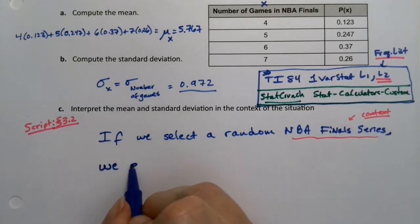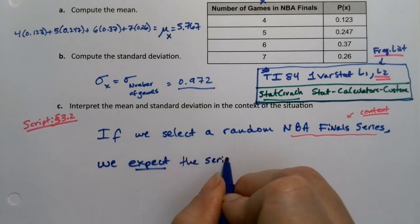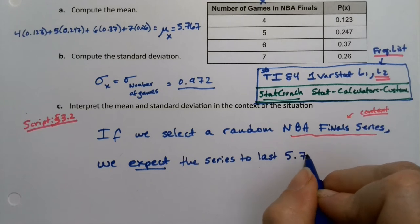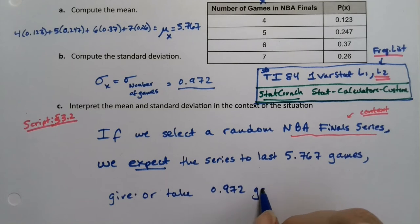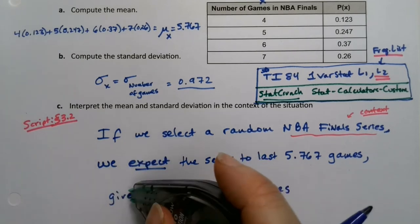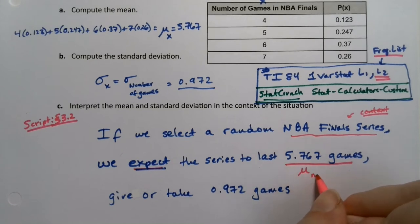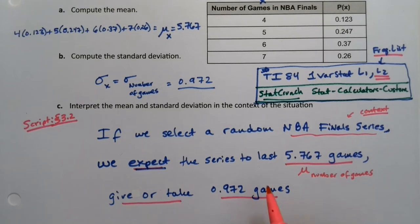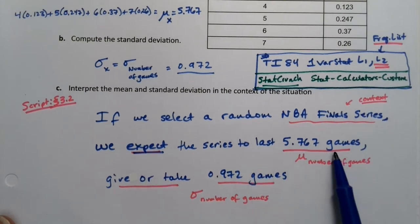We expect—and we wrote that in the script back in Section 3.2, so it's still there—the series to last 5.767 games, give or take 0.972 games. Okay, so the expectation of this is the mean, right? That's the μ for the number of games. And then the give or take and the 0.972 is the σ for the number of games. So we give it context, the expectation is the mean, give or take the standard deviation.